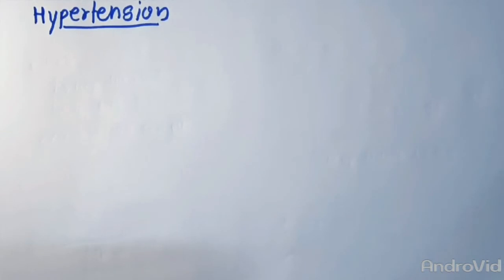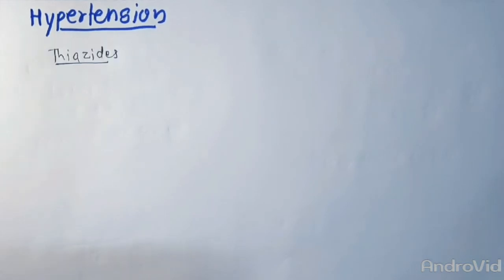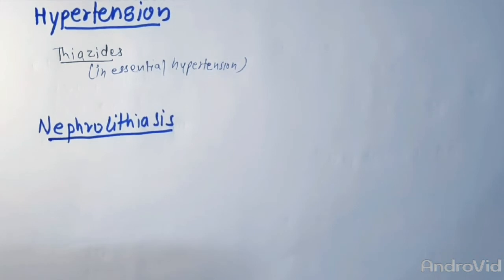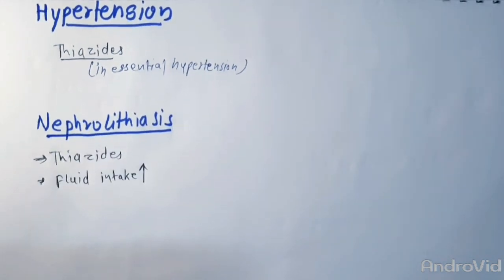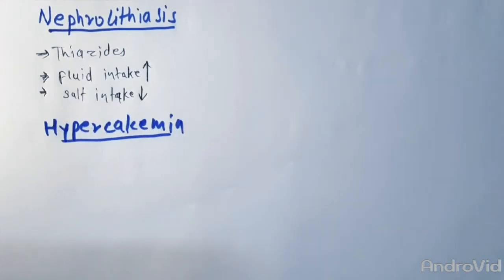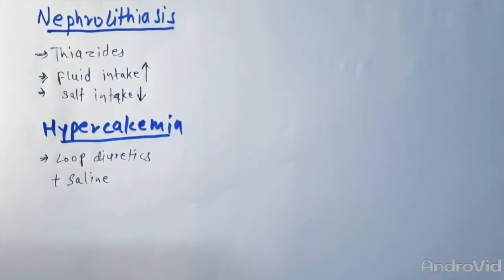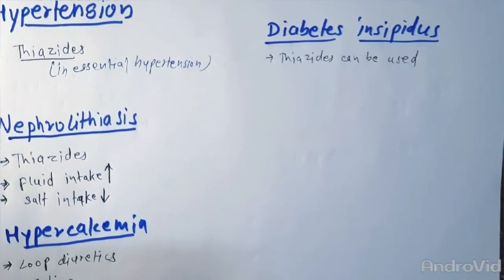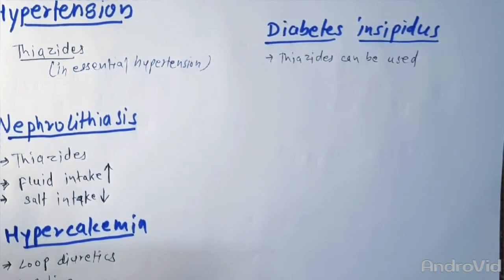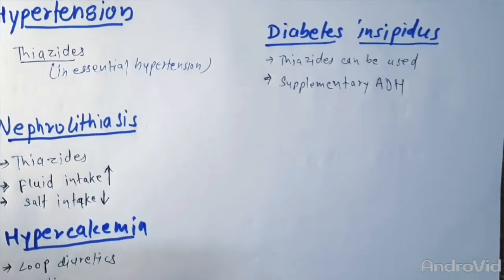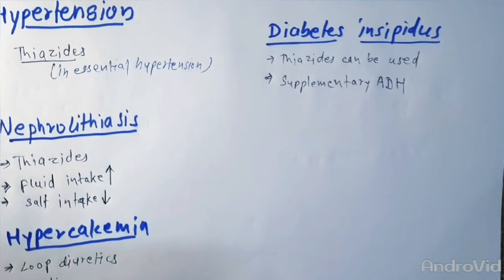Now moving towards the non-edematous states, we are going to discuss hypertension. The diuretic and mild vasodilator action of thiazides are useful in treating virtually all patients with essential hypertension. Talking about nephrolithiasis, in this case also thiazides are used. Fluid intake should be increased and salt intake must be reduced. Talking about hypercalcemia, loop diuretics are used with the simultaneous administration of saline. And when we talk about diabetes insipidus, thiazides can be used to reduce the polydipsia and polyuria, but the administration of supplementary ADH is the drug of choice in nephrogenic diabetes insipidus.